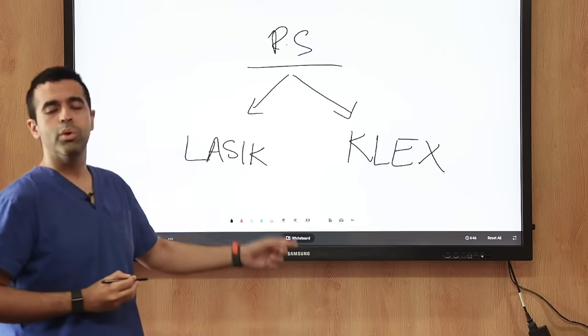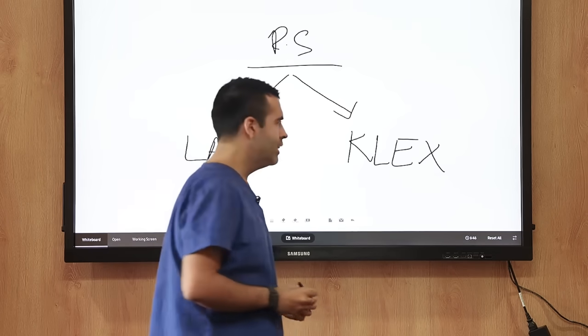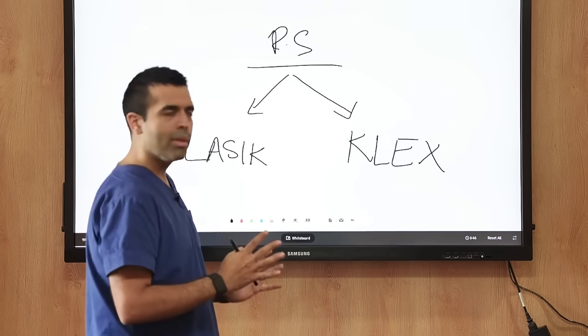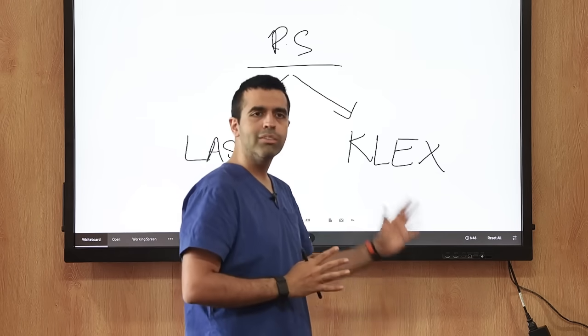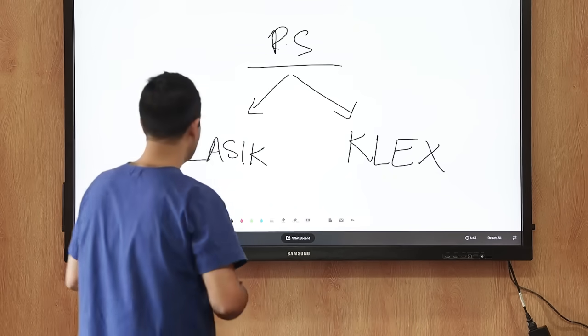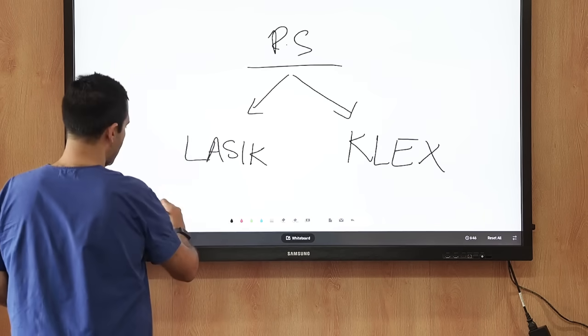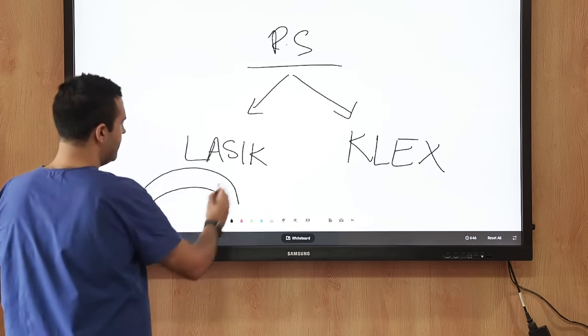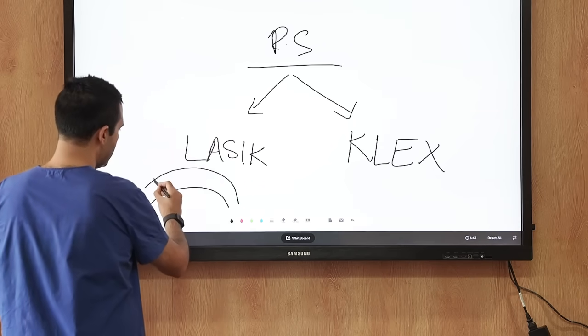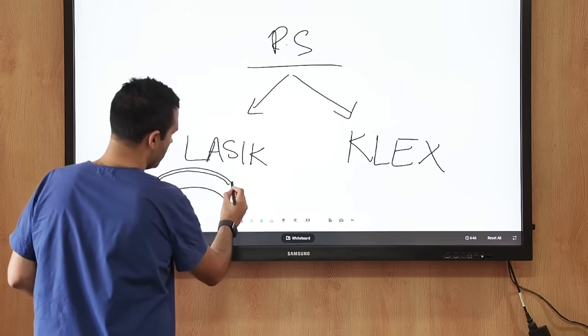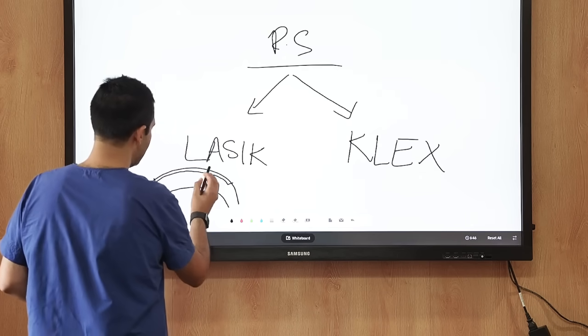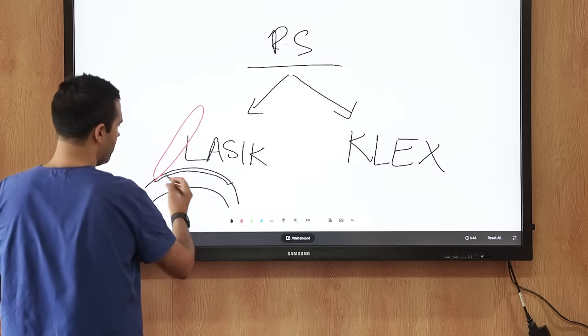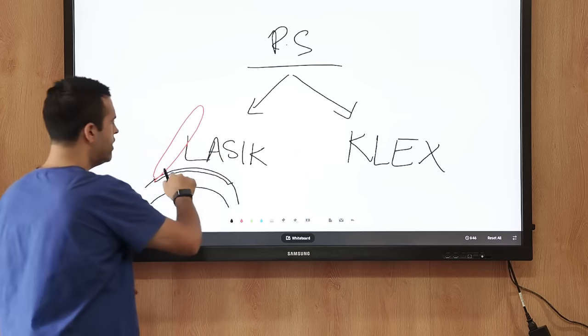In a LASIK procedure, we are making a flap on the cornea, but the KLEX procedure does not have a flap. If this is the cornea, or the outermost layer of the eye, in the LASIK procedure we fire a laser and make a flap on the cornea. This flap is later picked up, and then a laser is fired to remove part of the cornea to remove the power.